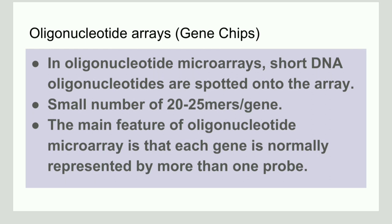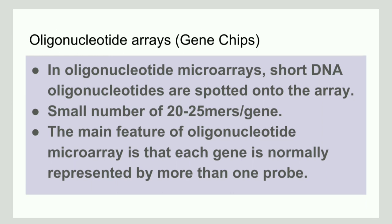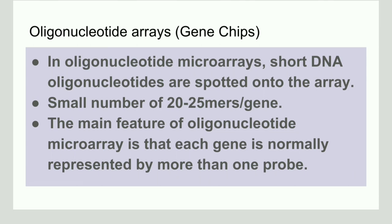The next type is the oligonucleotide array, also known as gene chips. In this microarray, short DNA sequences — oligonucleotides — are spotted onto the array. The main feature of an oligonucleotide array is that each gene is normally represented by more than one probe.